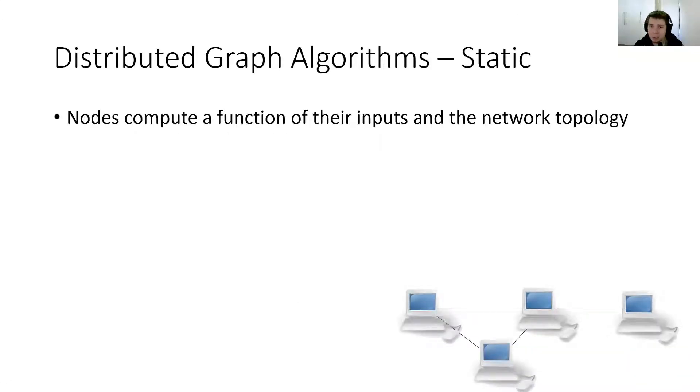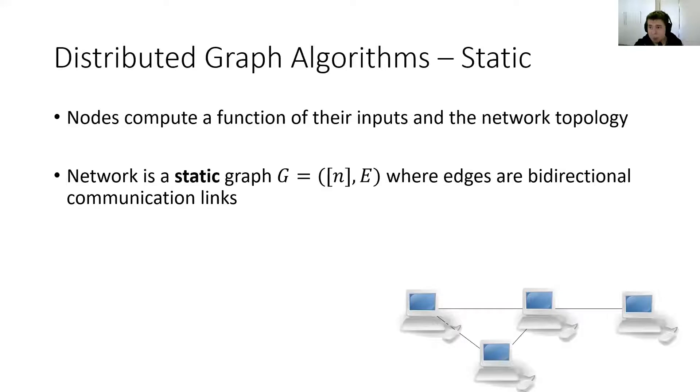In this work we deal with distributed graph algorithms. Let's first recall the static setting. In this setting we have a network of nodes, and the nodes wish to compute a function of the input and the network topology. This can be, for example, legal coloring of the graph, or maybe some sort of independent set. The network is modeled as a static graph, where edges correspond to bidirectional communication links between the nodes, through which they can exchange messages. We assume that the network is synchronous, so it proceeds in rounds. In this model, rounds are the main complexity measure.